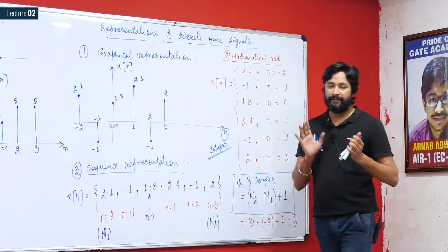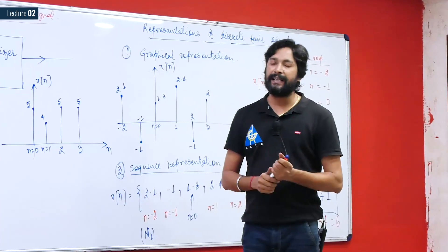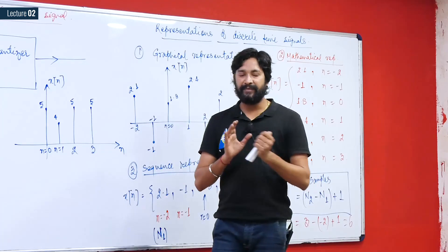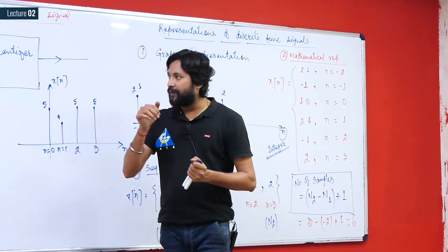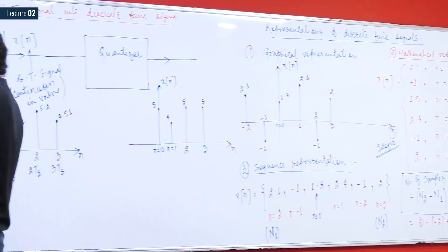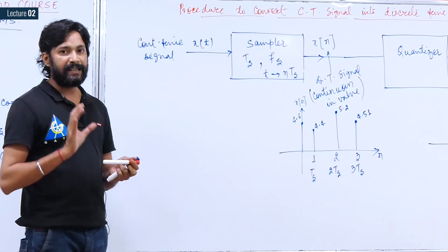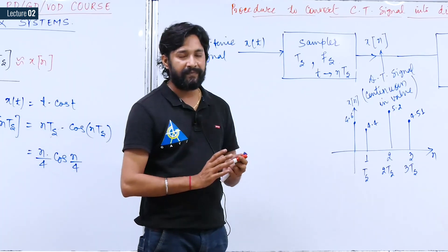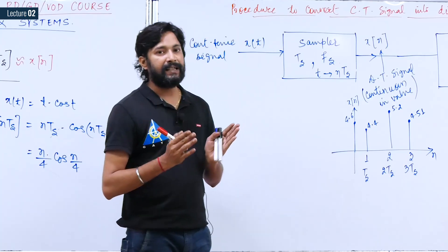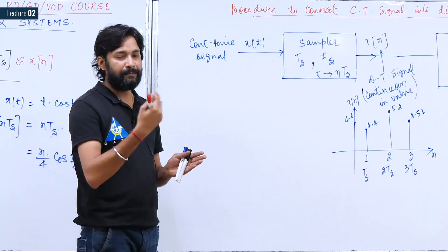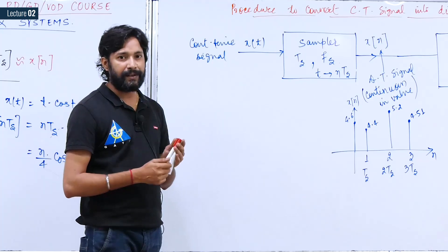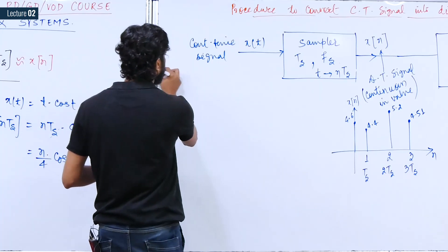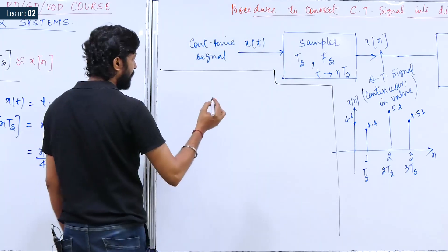Now we will discuss operations on signals and see the effects of those operations. We will simultaneously consider continuous-time and discrete-time signals. For each operation, we will examine its effect on key signal parameters such as area and time duration. Before that, let us recall two important concepts.